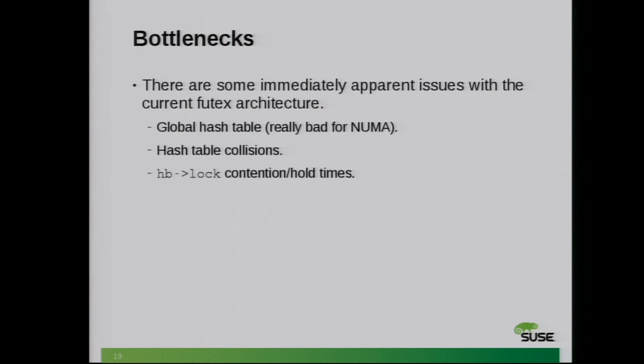With that architecture, it's intuitive to see some very specific performance issues. The first is that the hash table is globally allocated — therefore it's really bad for NUMA. On smaller systems you don't really care, but when you get to four nodes or beyond, you really start caring about the remote accesses. Only tasks running on the same node will have local accesses and therefore better latency.